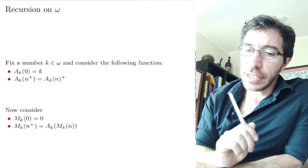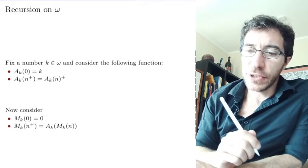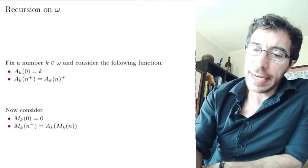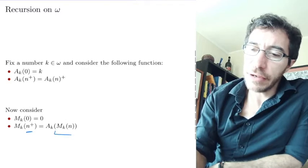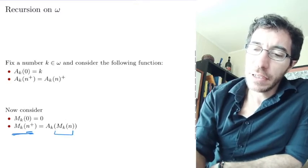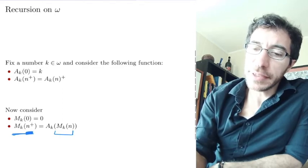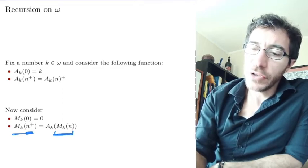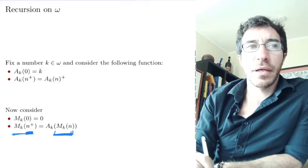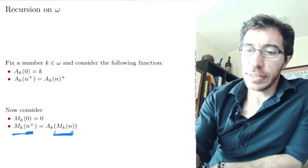Let's consider this other case. M sub k at 0 is 0 and at n plus 1, it takes the value of the same function. So you're defining m, m sub k at n plus 1, and to figure out the value of n plus 1, we assume we know the value of n and we apply a sub k to that value.